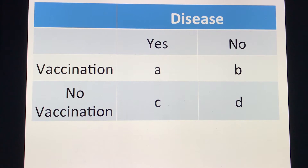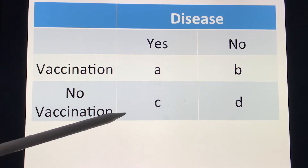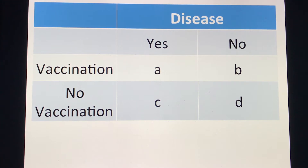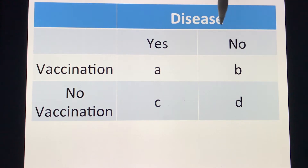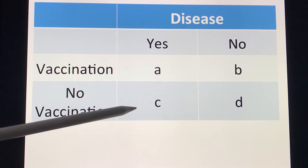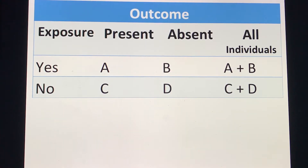So if we put this in a two-by-two table, we have the disease as one variable, and another variable — those who receive vaccination and those with no vaccination. The two-by-two table uses letters A, B, C, and D. Those who received vaccination and had disease, those who received vaccination but had no disease, those who had the disease and had no vaccination, and those with no disease and no vaccination.